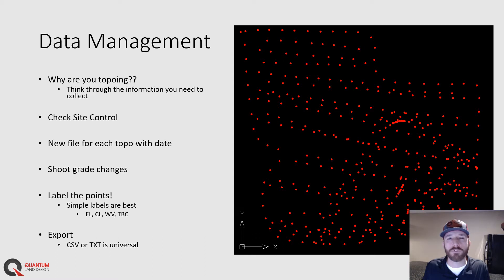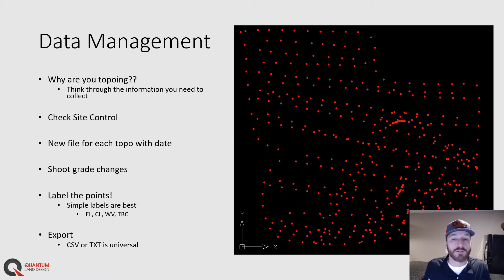Let's talk about data management. Why are you topoing the job site? What kind of information do you hope to derive from this? Are you trying to capture the entire project site to compare cuts and fills or make a cut-fill map? Are you trying to track production over just a certain area, say out of a pond or onto a building pad? Or maybe you just have to do an as-built survey where you need a few very specific points. You'll also need to make sure you check into site control every time — it's very important to verify your equipment was calibrated to the job site that day, and I like to save those points in every topo file.